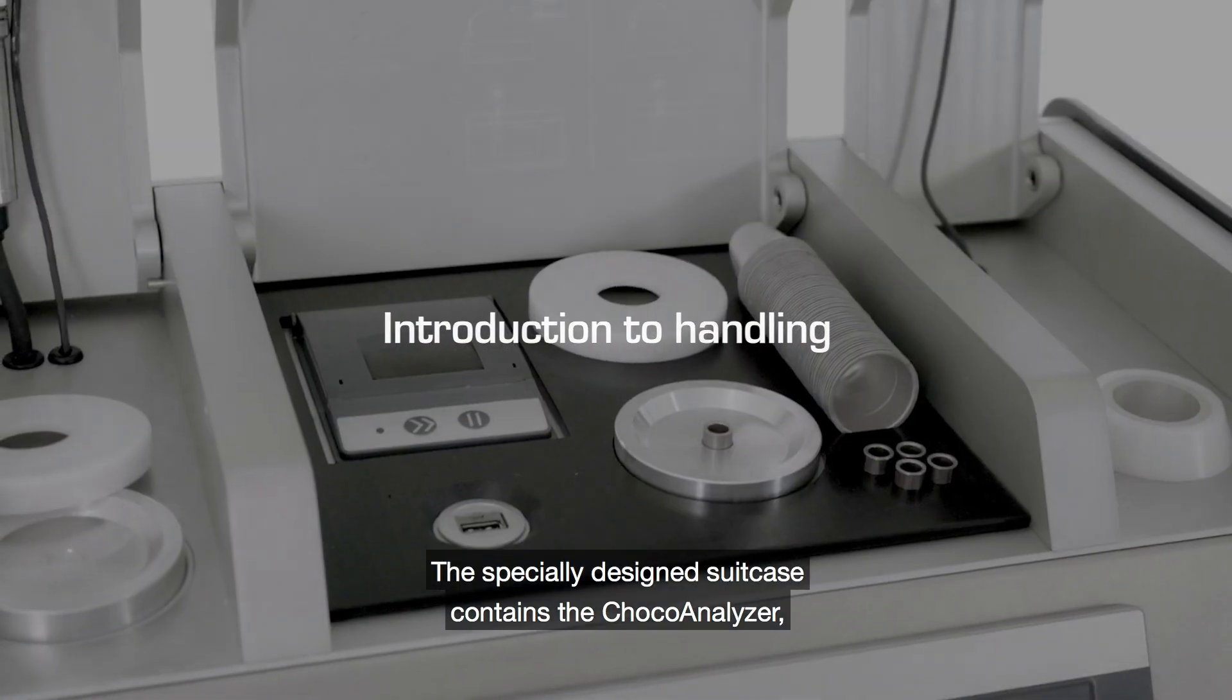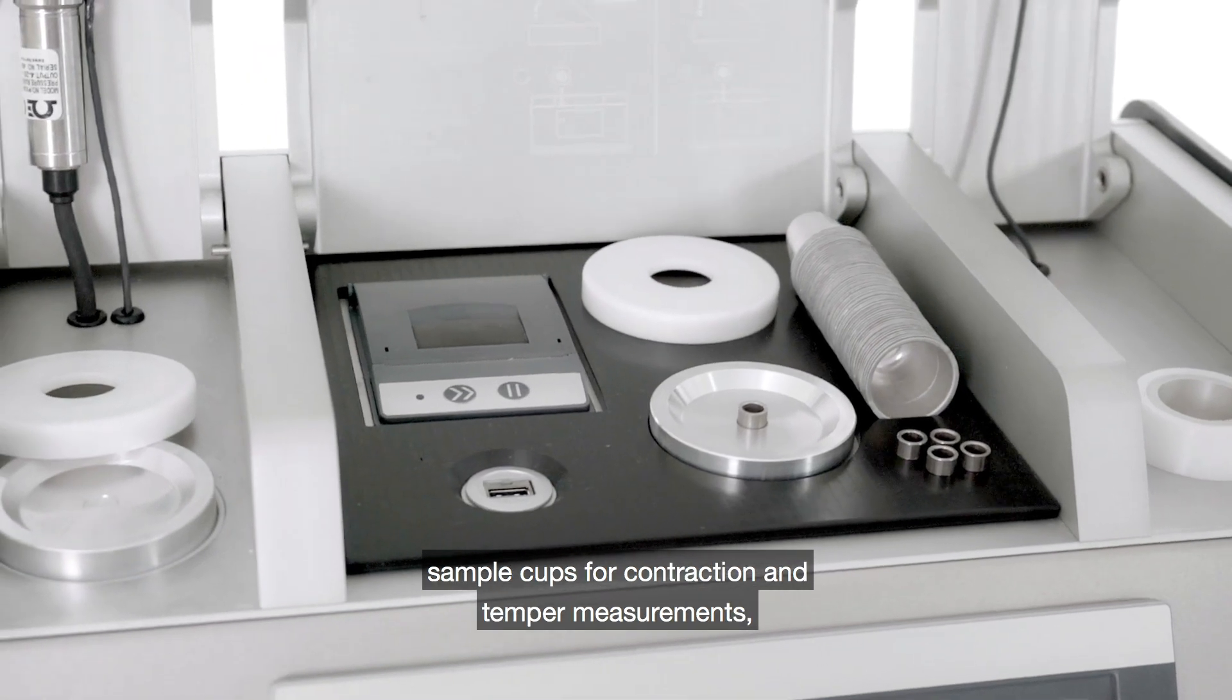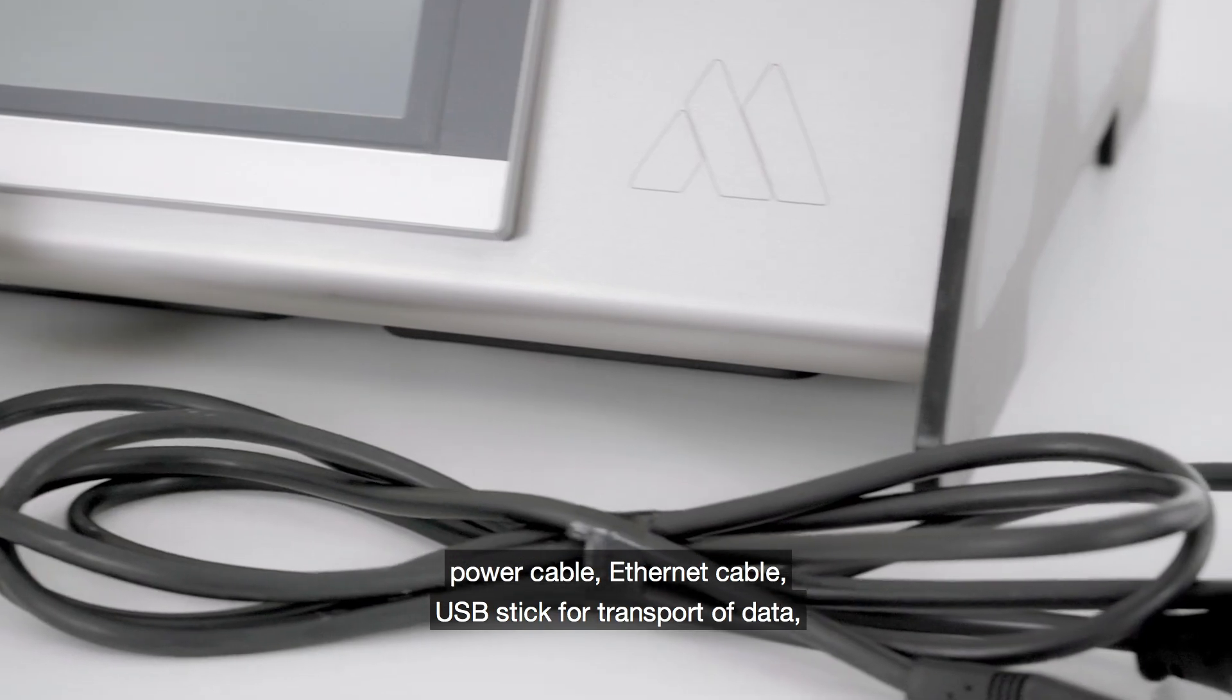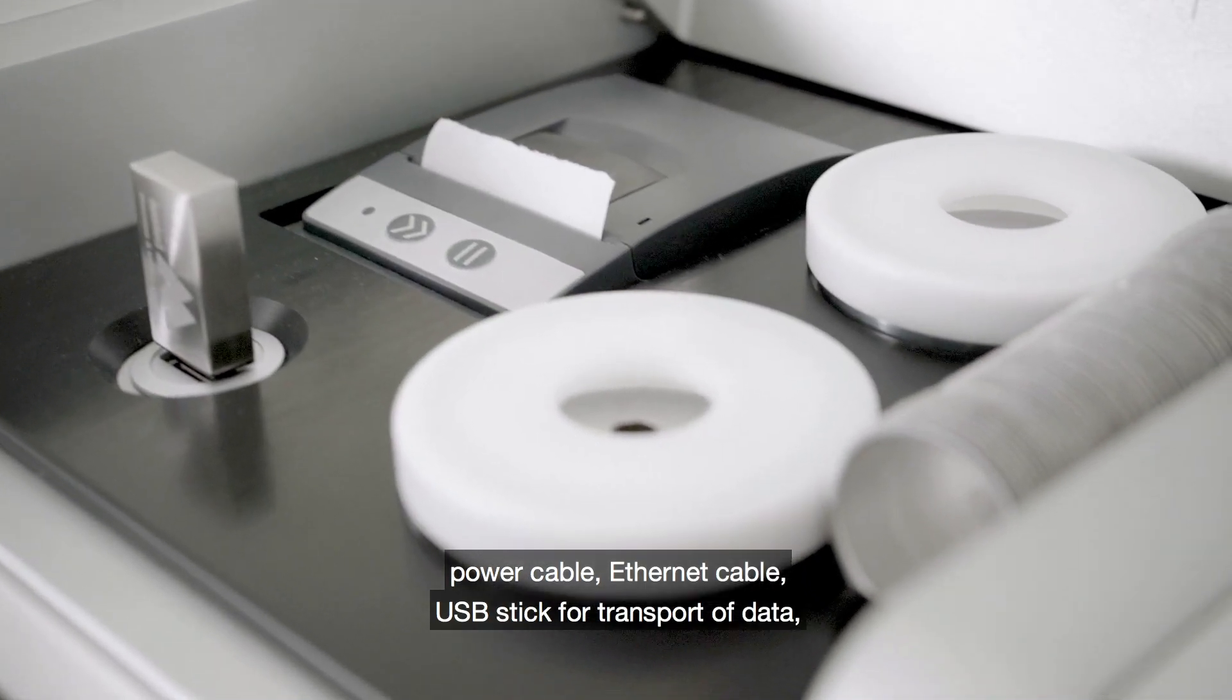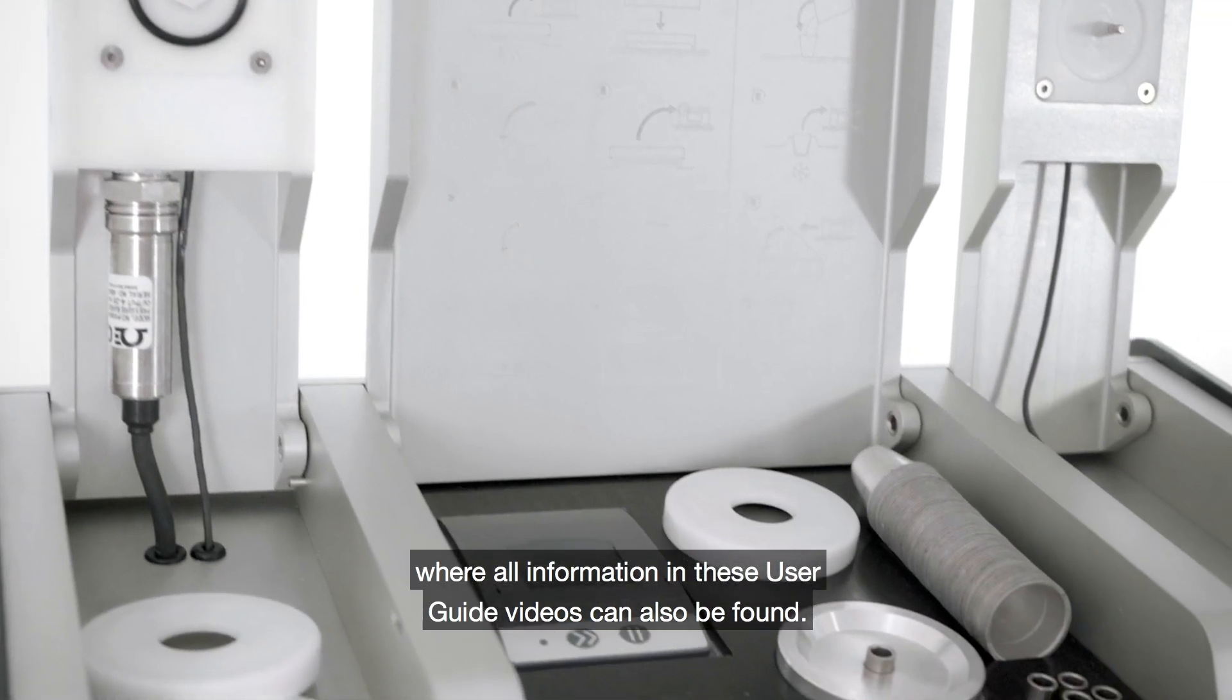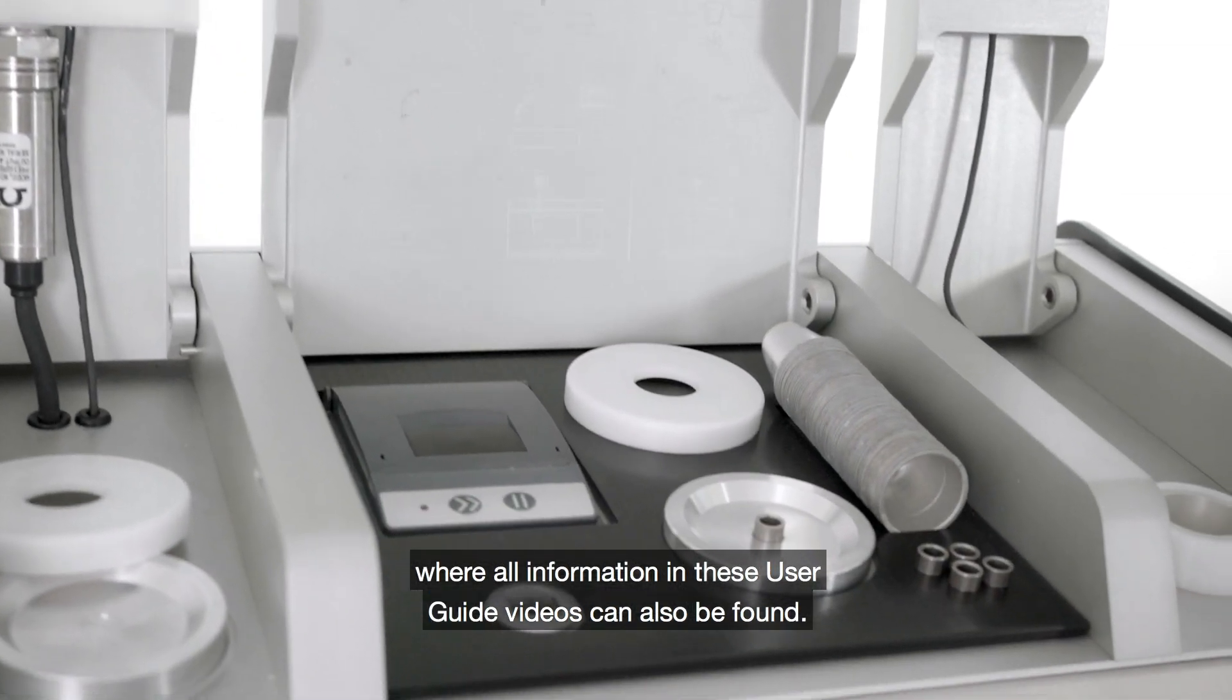The specially designed suitcase contains the ChocoAnalyzer, sample cups for contraction and temper measurements, power cable, Ethernet cable, USB stick for transport of data, and an extra roll of printing paper and a user manual where all information in these user guide videos can also be found.